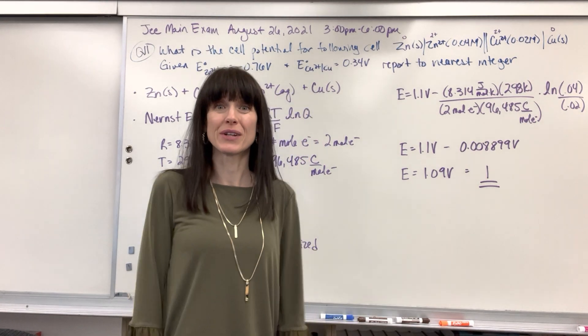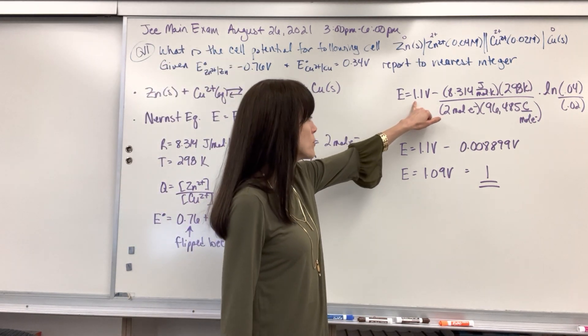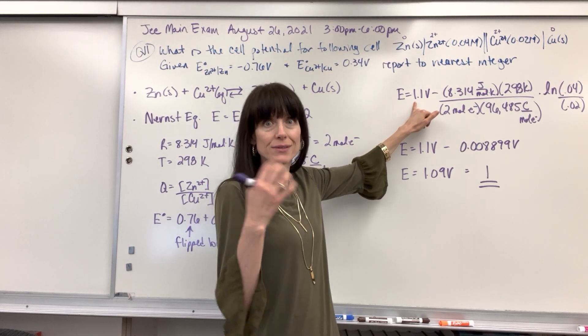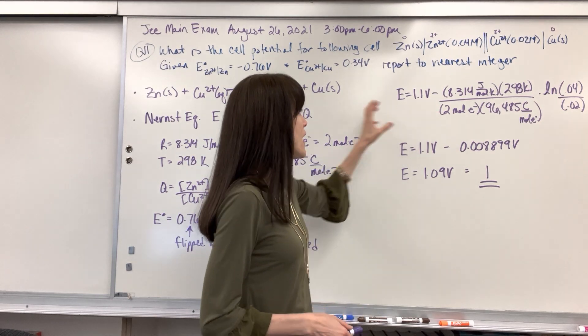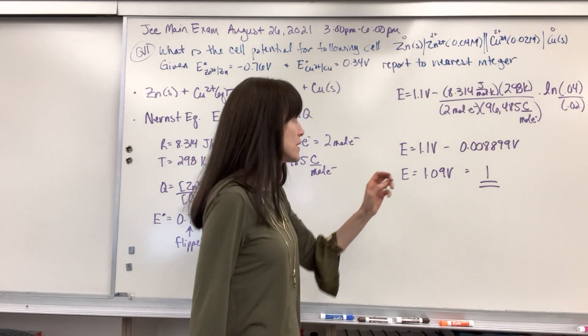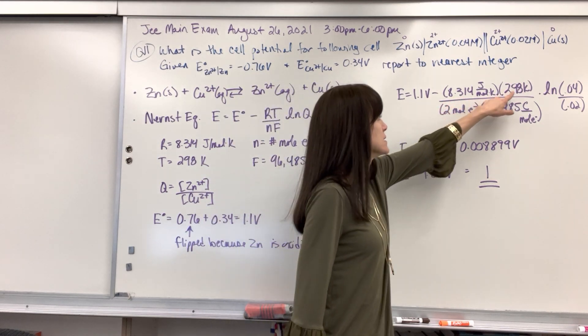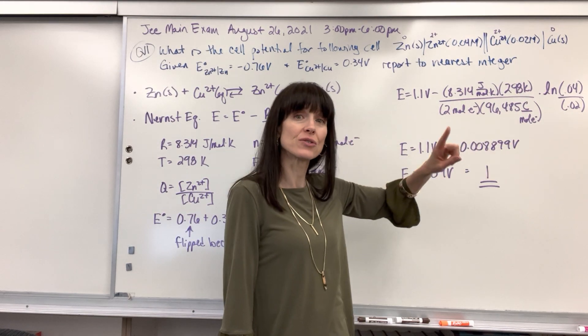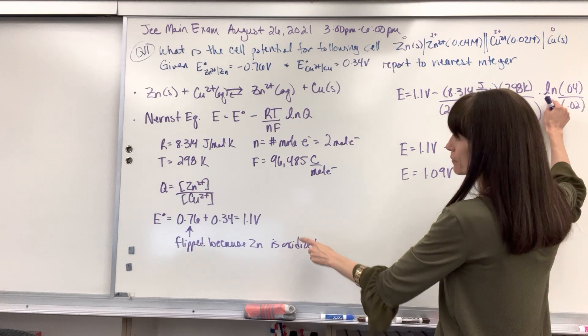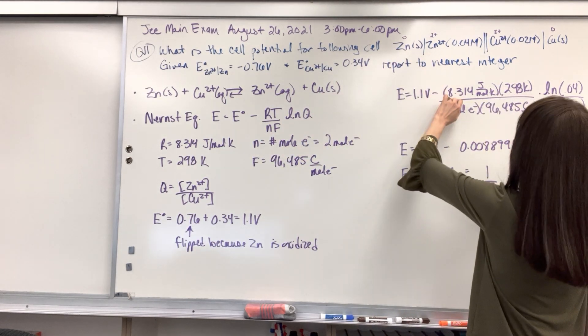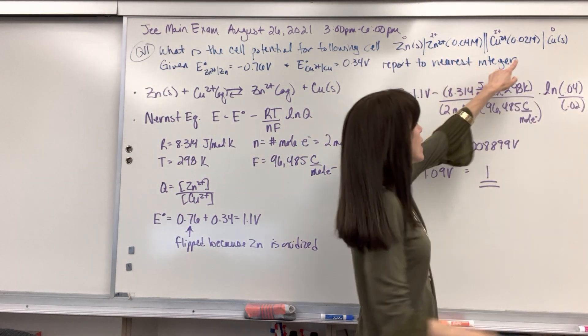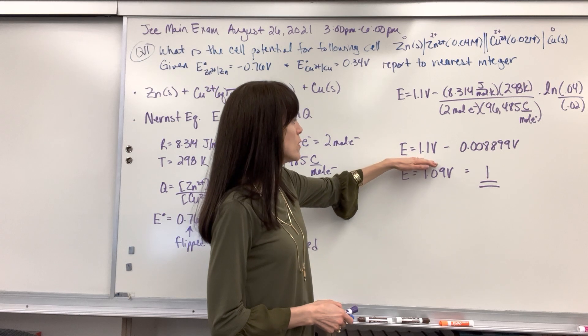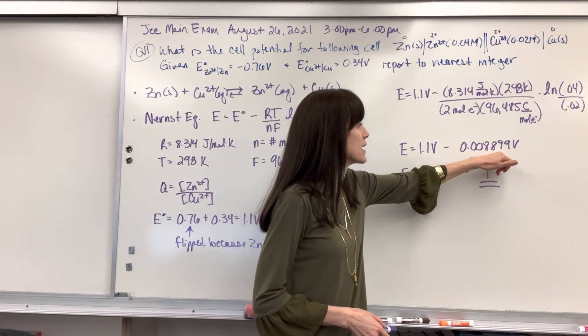So now we can plug and check. We're just going to put everything in. So we're going to have E is 1.1 volts, that's our standard potential when we're at one molar each, our standard conditions. And then we plug in this slew of information. Here's my R, T, N, remember two moles of electrons, my Faraday's constant, and then natural log of Q is going to be my zinc. My zinc was, I come back up here, the 0.4 divided by copper, which is 0.04 divided by 0.02. Plug everything in and we're going to get 1.1 volts minus 0.008899 volts.